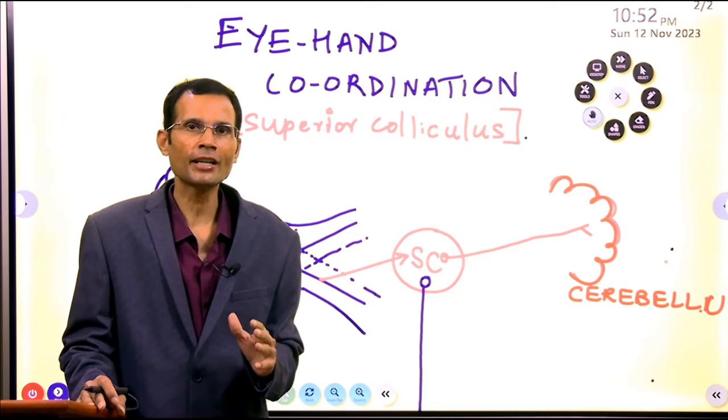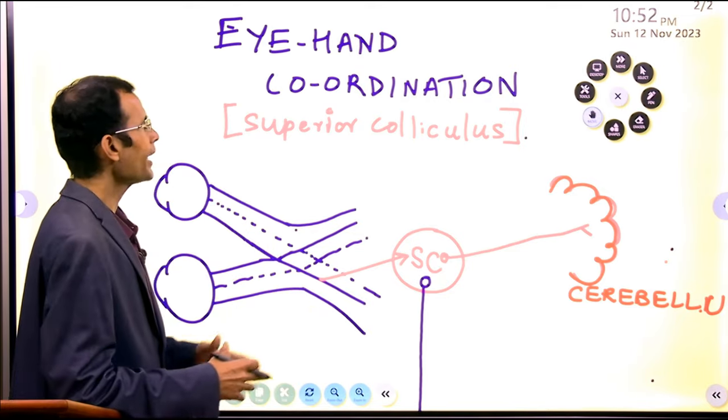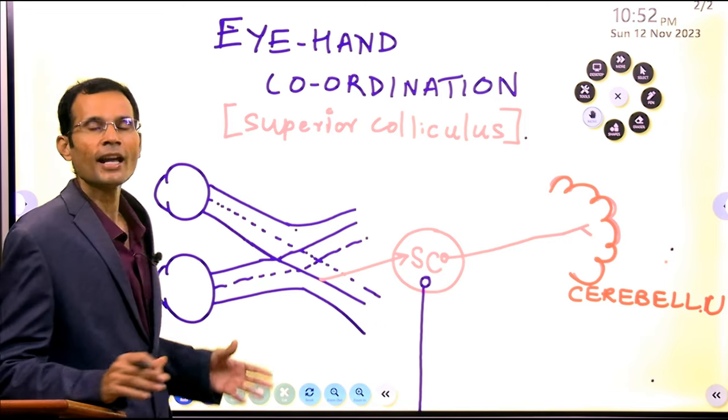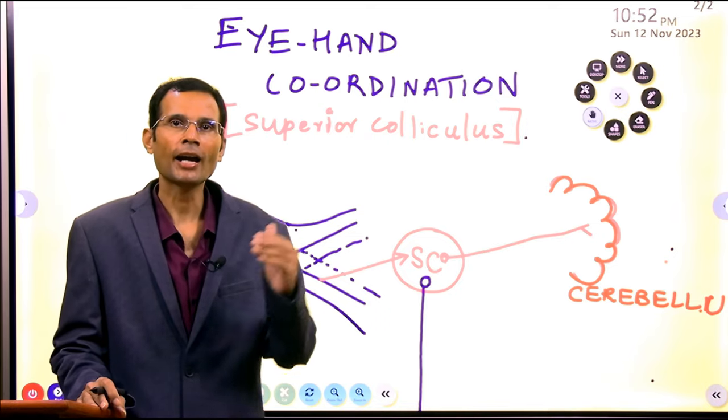But what was outstanding, what was exceptional was the eye-hand coordination. So let's understand what is the neural circuitry involved in eye-hand coordination.